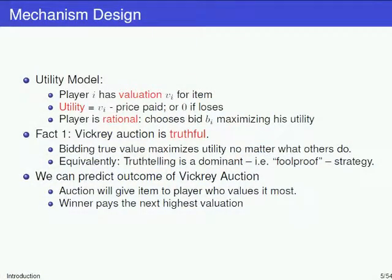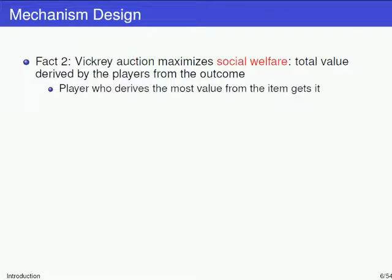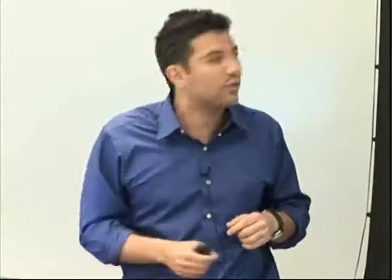Equivalently, truth-telling is a dominant strategy — it's always in a player's best interest to tell the truth, no matter what everybody else is doing. Given this, a rational player is going to tell the truth, so the auction gets the true values and gives the item to the player who values it most. The Vickrey auction also maximizes social welfare — the total value derived by the players from the outcome — because the player who values the car the most gets the car.